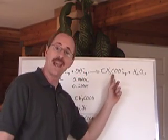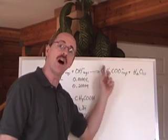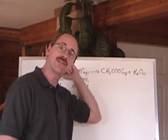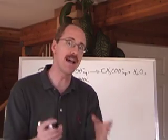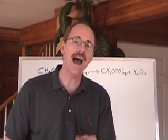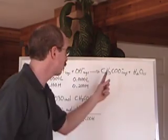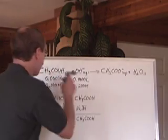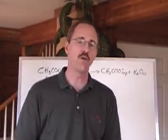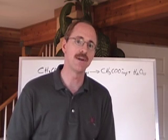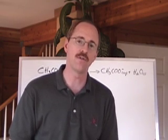This forms, and it is the conjugate base ion to this weak acid, and it forms in sufficient enough concentration to mess up the pH. We actually have to find the concentration of that chemical, as well as the concentration of this one, and then use a fancy formula to be able to find the pH. It's called the Henderson-Hasselbalch formula.